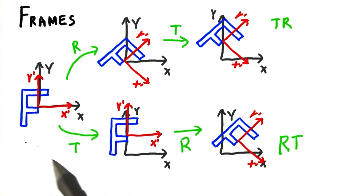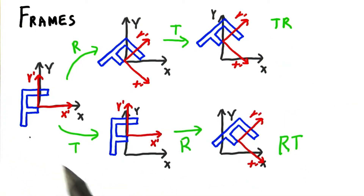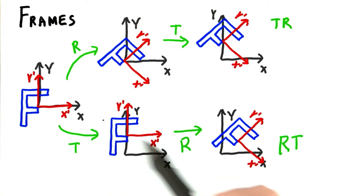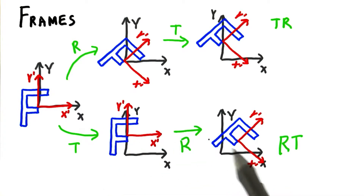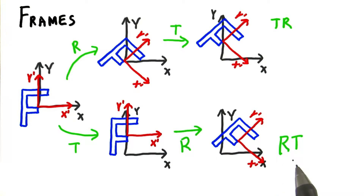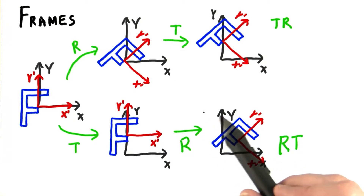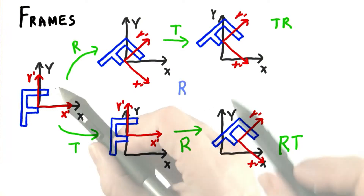However, we're now able to use matrices whichever way we want. So say we reverse the order. If instead we first translate up a unit, then rotate, we get this — the notation RT. Clearly different, with T changing the origin, we then rotate around.